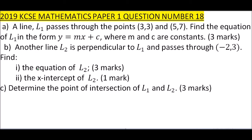Question number 18, 2019. We are told a line L1 passes through points (3, 3) and (5, 7). Find the equation of line L1 in the form y = mx + c, where m and c are constants.